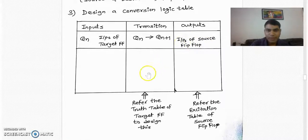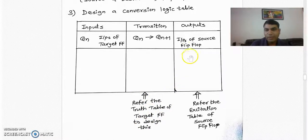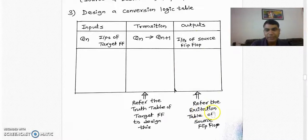To design the transition column, we refer to the truth table of the target flip-flop. And to design the last output column of this table, we refer to the excitation table of the source flip-flop.